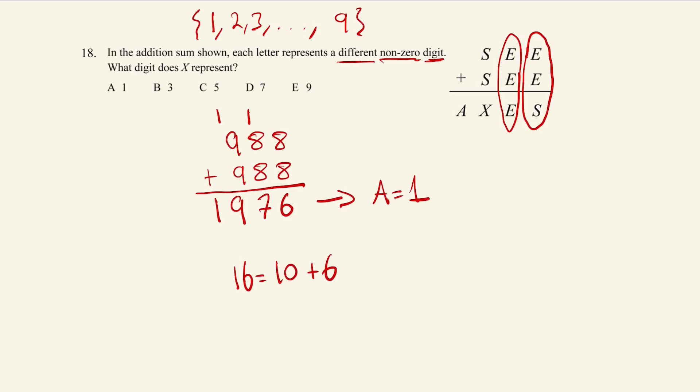So what we can recognize is whatever S is, E is going to be one more than it. So we can say whatever S is, E is going to be one more than it. So in other words, S equals E take away one.